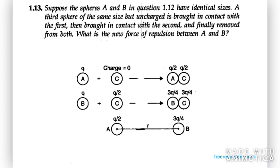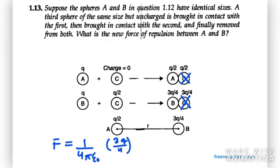After C is removed from both, A and B are separated by a distance R. We need to find the force of repulsion between A and B. As you know, the force is 1 over 4πε₀ times the charges — in this case Q/2 for A and 3Q/4 for B — divided by R squared.